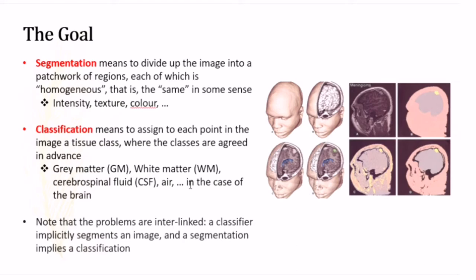We also know about classification in computer vision, which is almost similar. It means to assign to each point in the image a tissue class where the classes are agreed in advance, such as gray matter, white matter, CSF, or IR. We need to realize that classification and segmentation are implicitly correlated. Segmentation also implies a classification, and classification also implies segmentation.